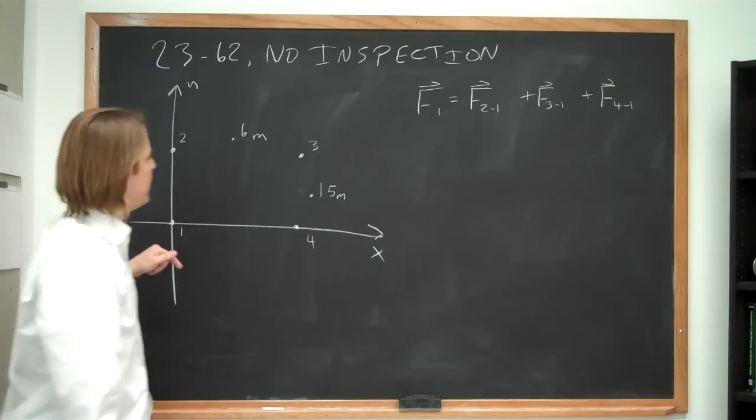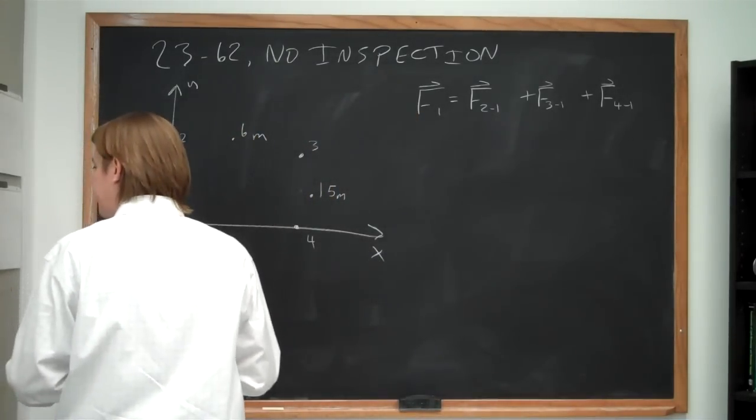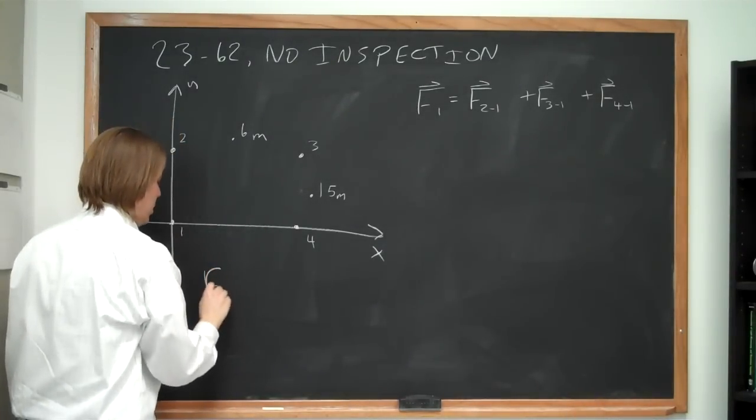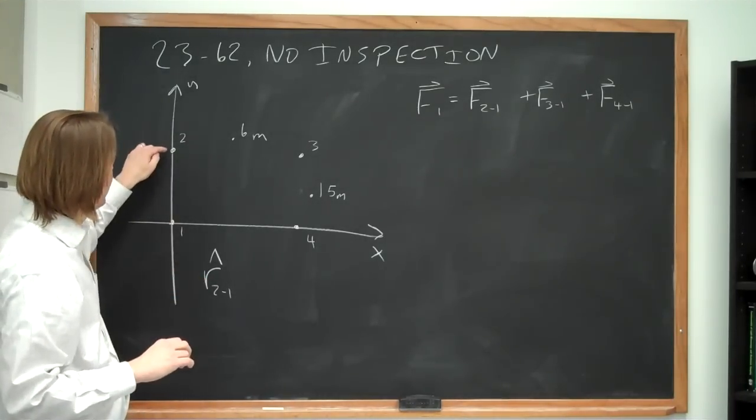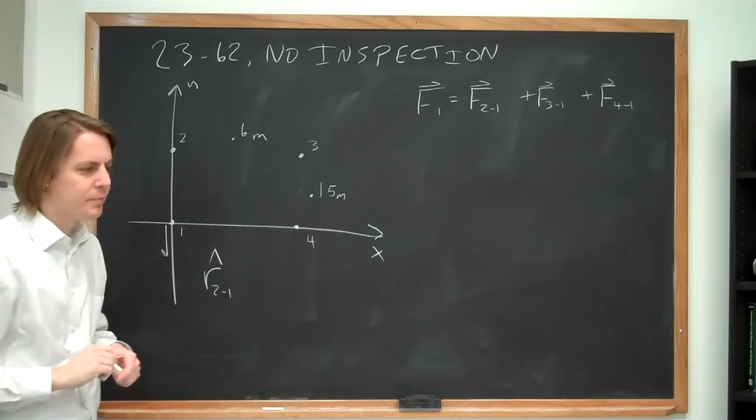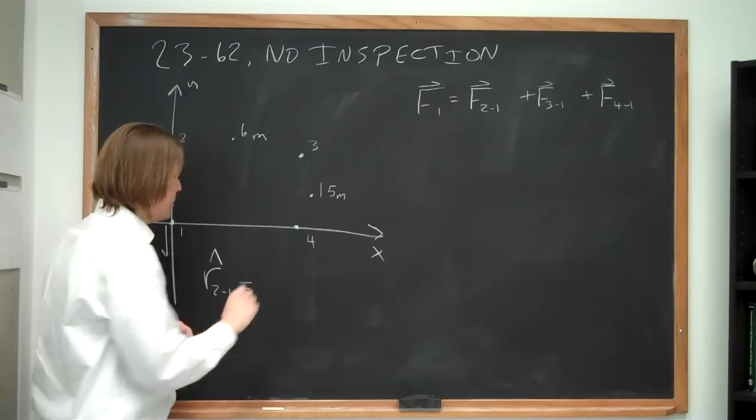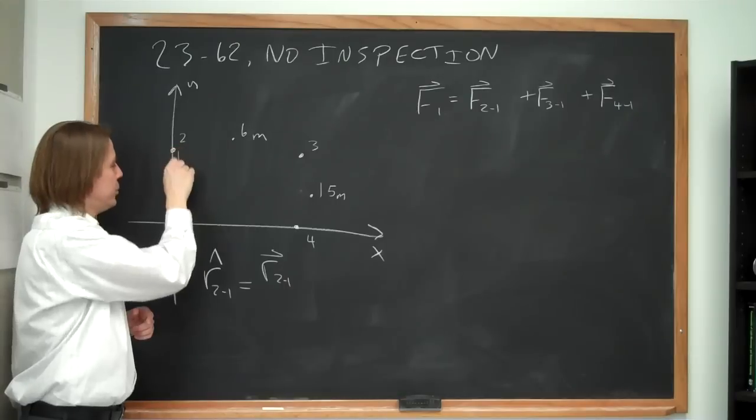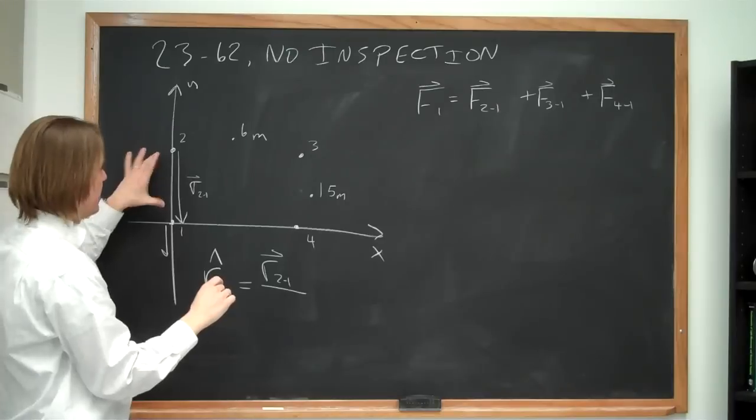What we're going to do then is go through and calculate each one of these, and we're not going to use inspection. We're going to use the definition of the unit vector. So remember I told you about this unit vector. Say we're writing the unit vector r21, we put that little hat on it. That means it's a vector with a magnitude of 1 pointing in the direction from 2 to 1. So r21 would look kind of like this. But really what we ought to think about is what is the definition of r21. You can define it like this: you can say it is the vector r21, the actual vector that goes from 2 to 1, divided by the distance r21.